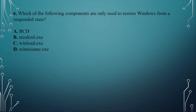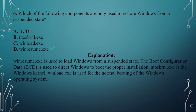Question number six: Which of the following components are only used to restore Windows from a suspended state? A. BCD. B. ntoskrnl.exe. C. winload.exe. D. winresume.exe. The answer is D, winresume.exe, which is used to load Windows from a suspended state. The boot configuration data, BCD, directs Windows to boot the proper installation. ntoskrnl.exe is the Windows kernel, and winload.exe is used for the normal booting of the Windows operating system.